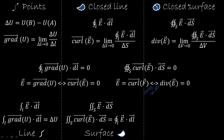To sum up: we have closed surfaces on which we define the closed surface integral. We have the divergence, which is an infinitesimal closed surface integral. We saw that the closed surface integral of a curl is always equal to zero. We also saw that if a vector field is the curl of another field, then its divergence is zero, and if the divergence of a vector field is zero, then we can define a vector potential — but this can only be done in three dimensions. So let's continue.